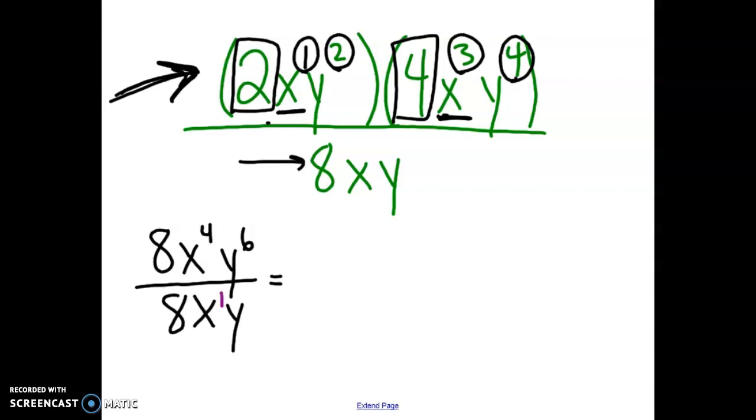So for our x's, we have 4 and 1. So 4 minus 1 will give us x to the third. And then 6 for the y. And then the bottom, that's also a 1. So 6 minus 1 gives us y to the fifth.